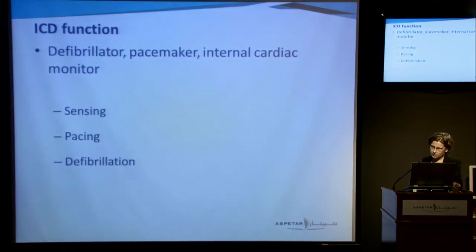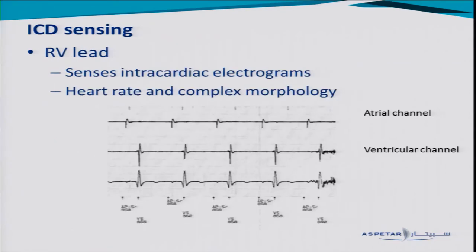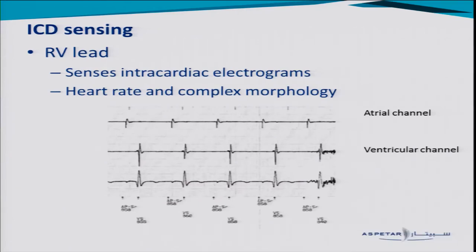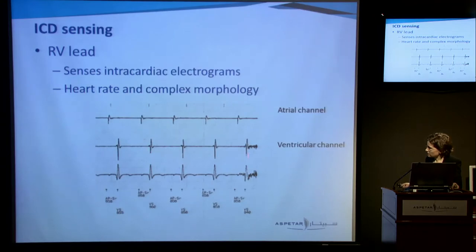ICDs work as defibrillators, as pacemakers, and as internal cardiac monitors. The sensing component of the lead is perhaps the most important aspect of the whole system — the device has to be able to see the patient's heart rhythm, detect if the patient goes into VT or VF, and know what's going on. With two leads — one in the right atrium and one in the right ventricle — you get both atrial and ventricular channels as intracardiac electrograms. When you interrogate the device, you can also get a surface ECG printout corresponding to those intracardiac electrograms.